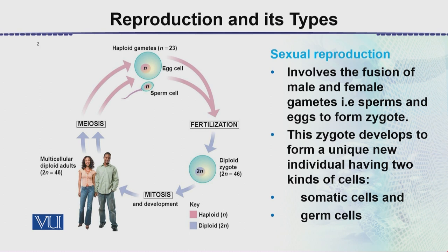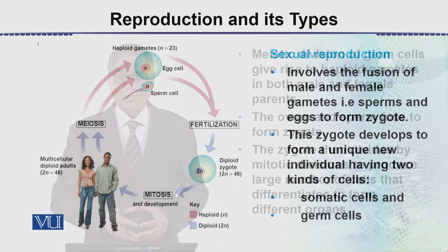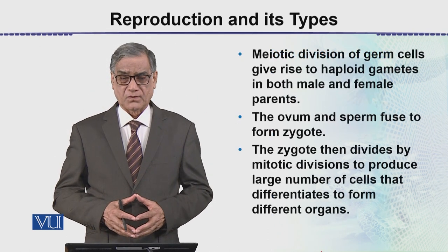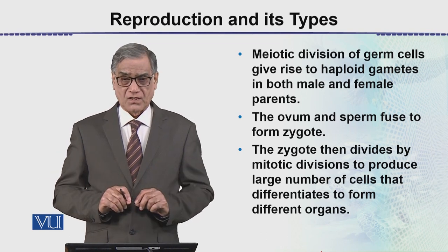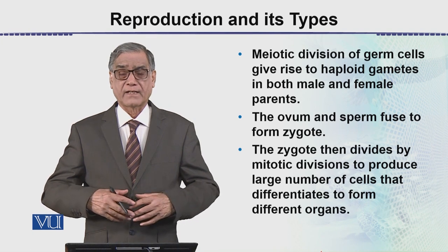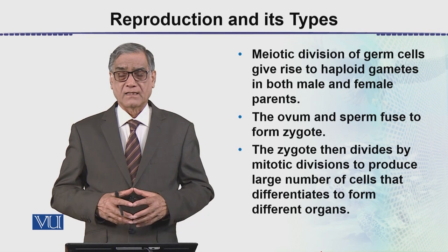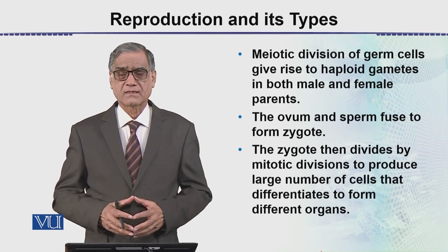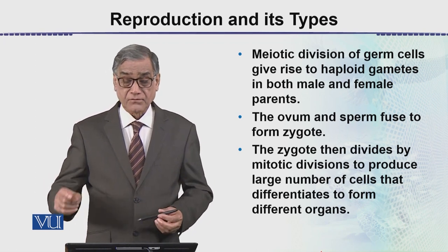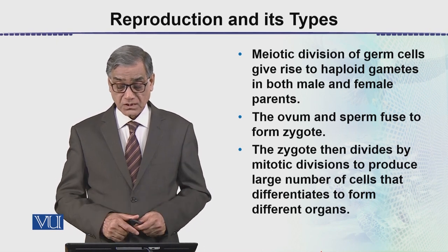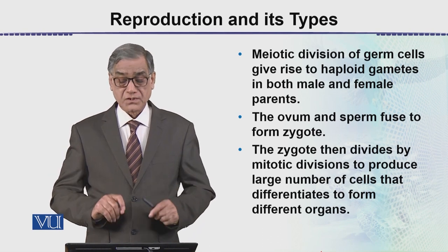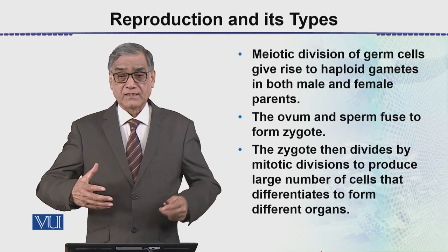In the reproductive organs, germ cells undergo meiosis to produce sperms and eggs. These unite together in the fertilization process to form a diploid zygote. The ovum and sperm fuse to form the zygote, and the zygote then divides by mitosis to produce a large number of cells that differentiate to form different organs.